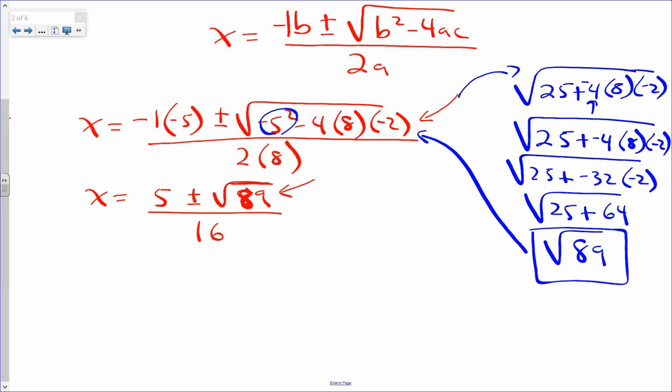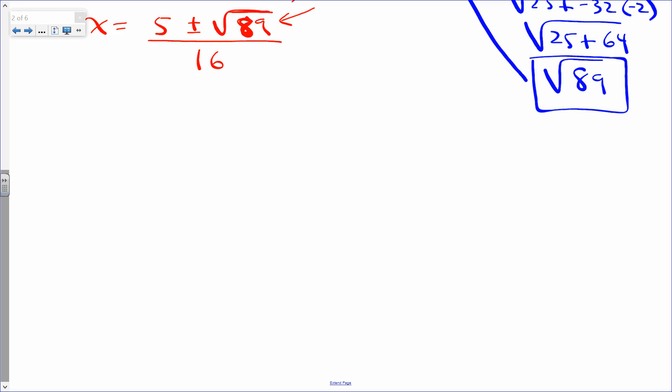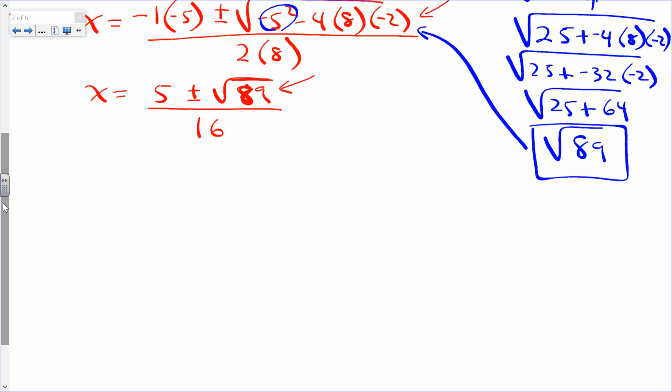So the two solutions are really 5 plus the square root of 89 divided by 16 and 5 minus the square root of 89 divided by 16. In other words, I can write them out this way. So we're technically done here. We have our solutions, which is the same thing as saying 5 plus the square root of 89 divided by 16 is one solution, and the second solution is 5 minus the square root of 89 divided by 16.